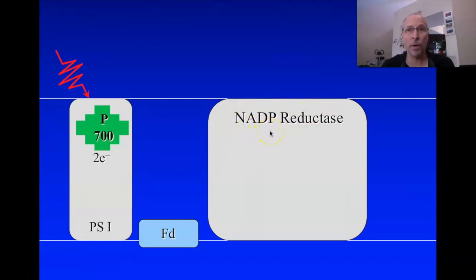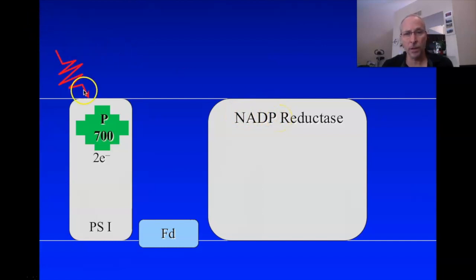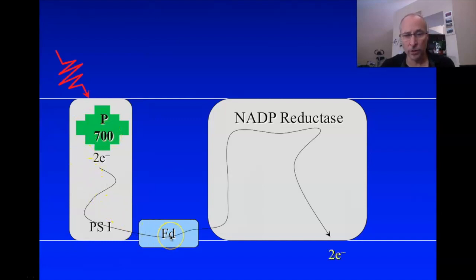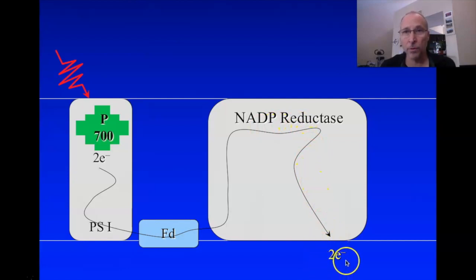To reduce NADP, remember we either take off an oxygen or add a hydrogen. In this case, we're going to add a hydrogen and make NADP into NADPH. Photons come in, they oxidize P700, the two electrons get transferred to ferredoxin, which transfers them to NADP reductase, and the electrons end up on NADP reductase at a high energy state.